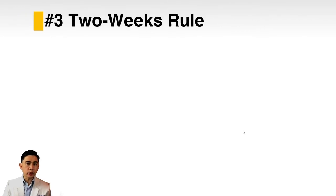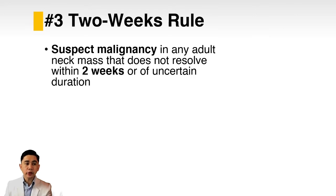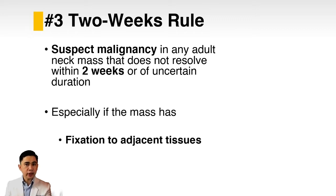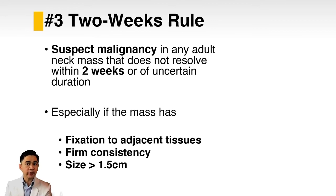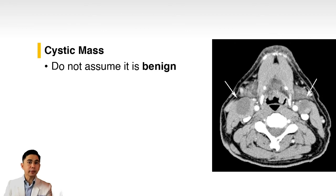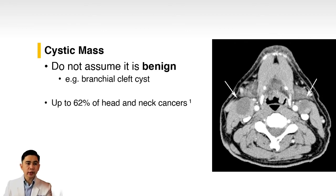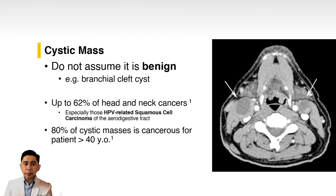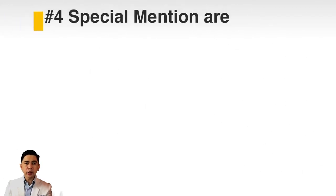Third is what we call the two-week rule: suspect malignancy in any adult neck mass that does not resolve within two weeks or is of uncertain duration, especially if it has the following characteristics — fixation to adjacent tissue, firm consistency, size of 1.5 centimeters or greater, or ulceration of the overlying skin. Also, do not assume that cystic masses are benign — up to 62 percent of head and neck cancers are cystic in nature, especially HPV-related squamous cell carcinoma of the aerodigestive tract. For patients 40 years and above, 80 percent of cystic masses are cancerous.